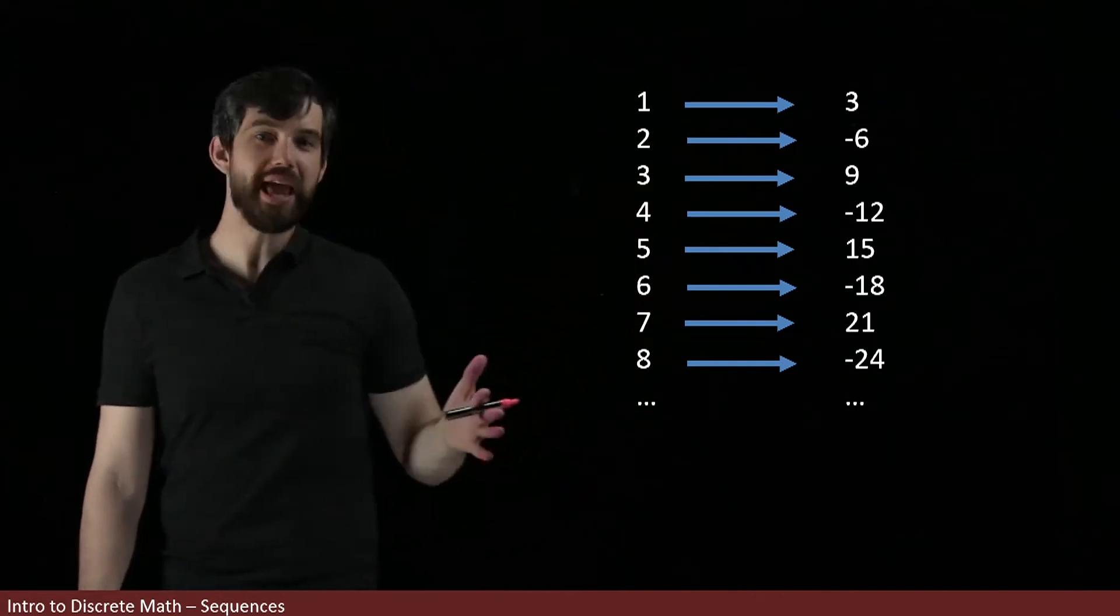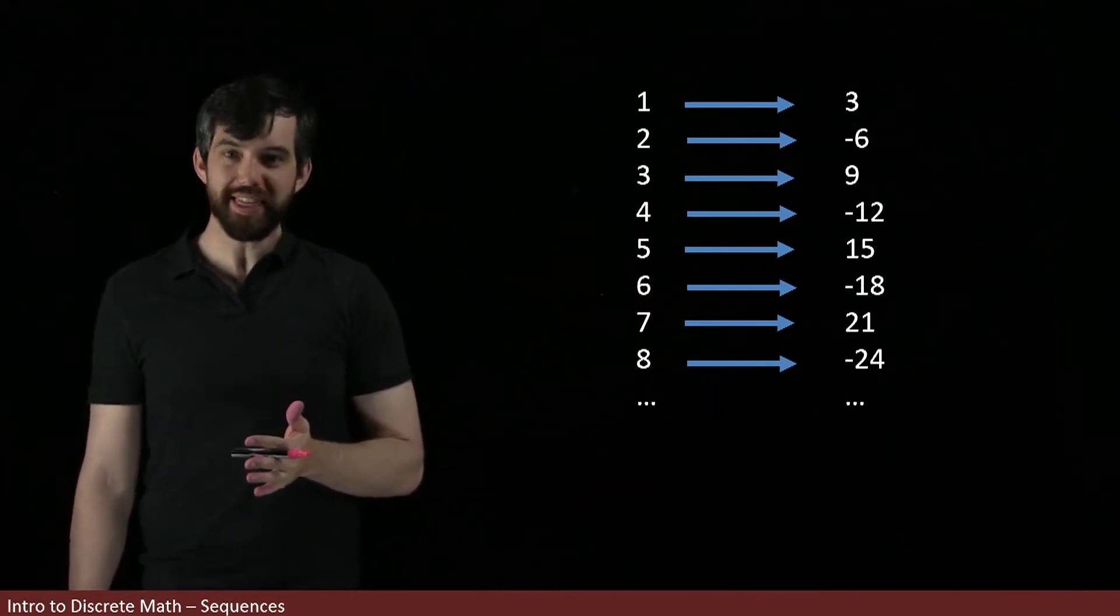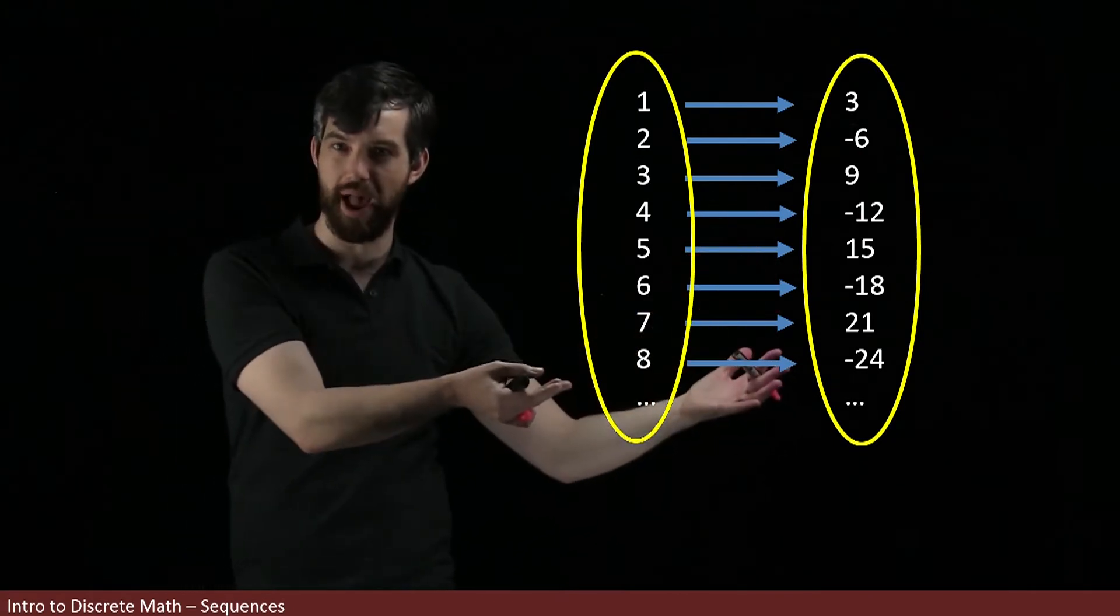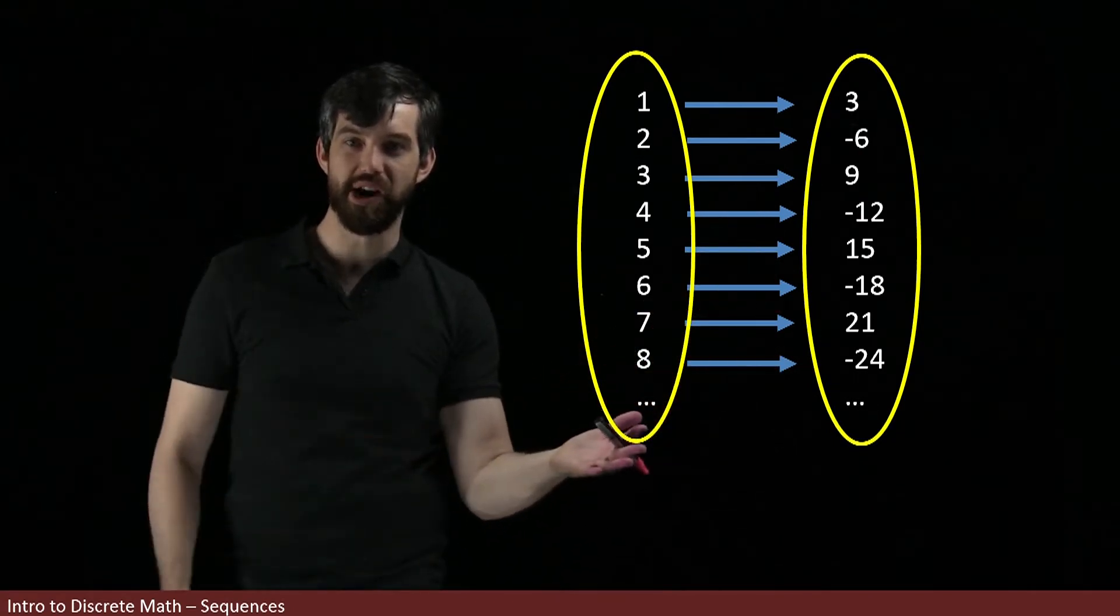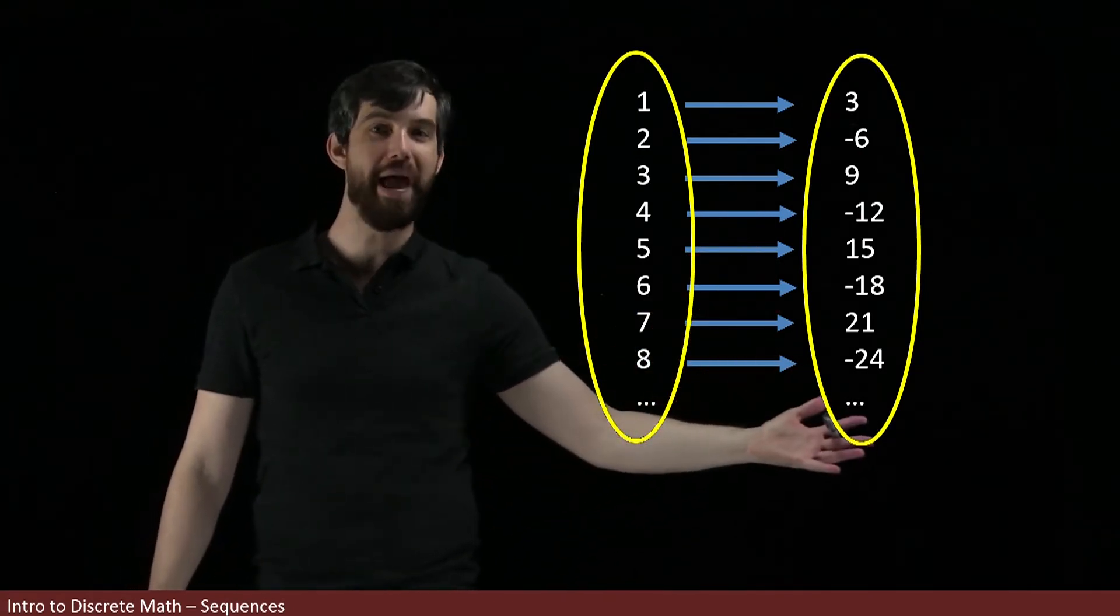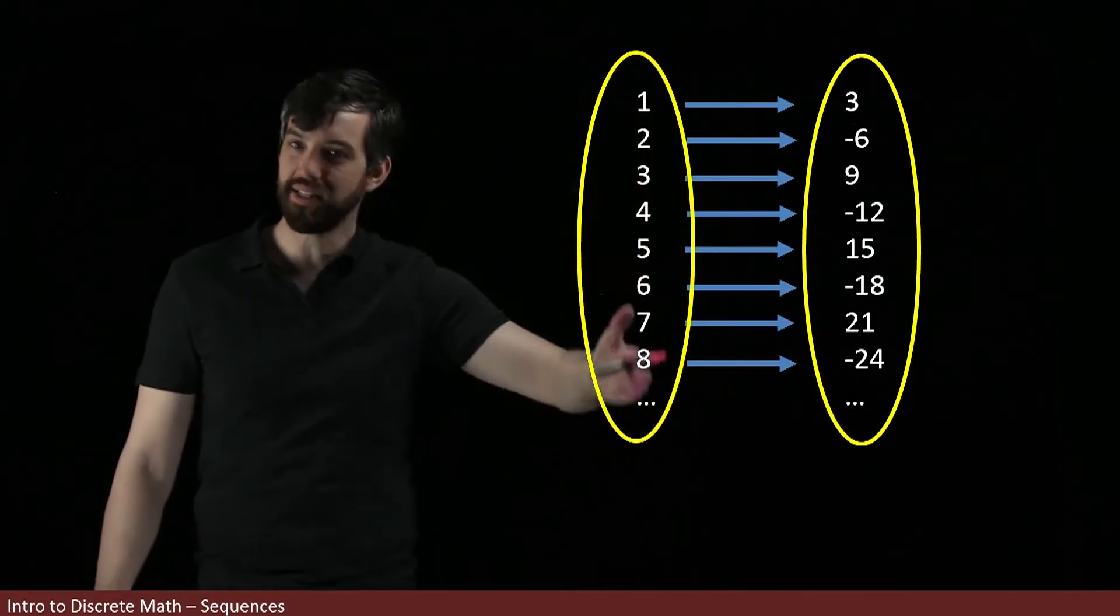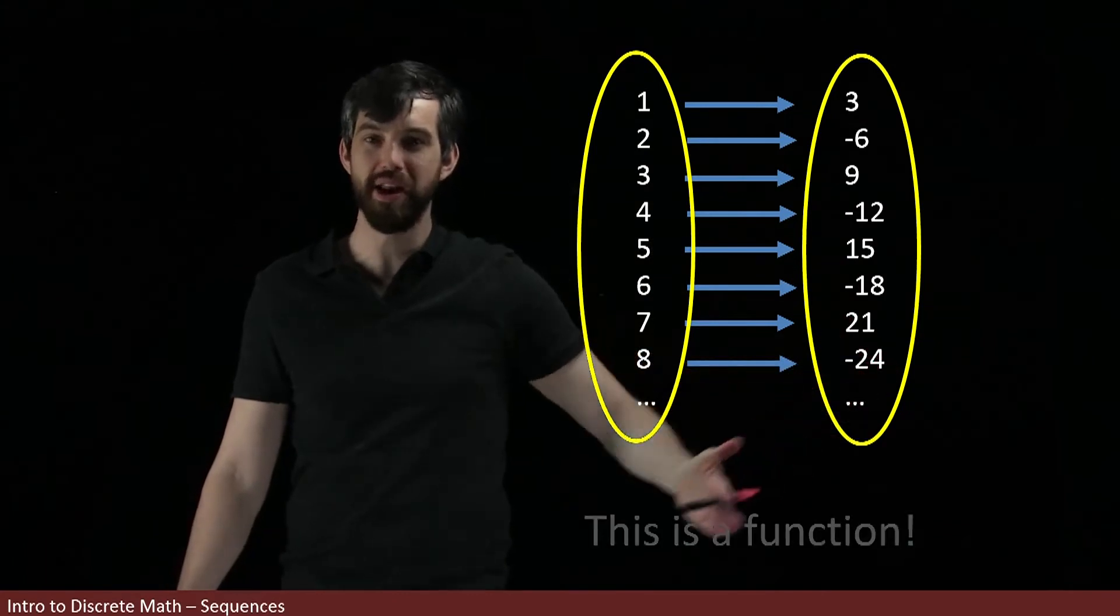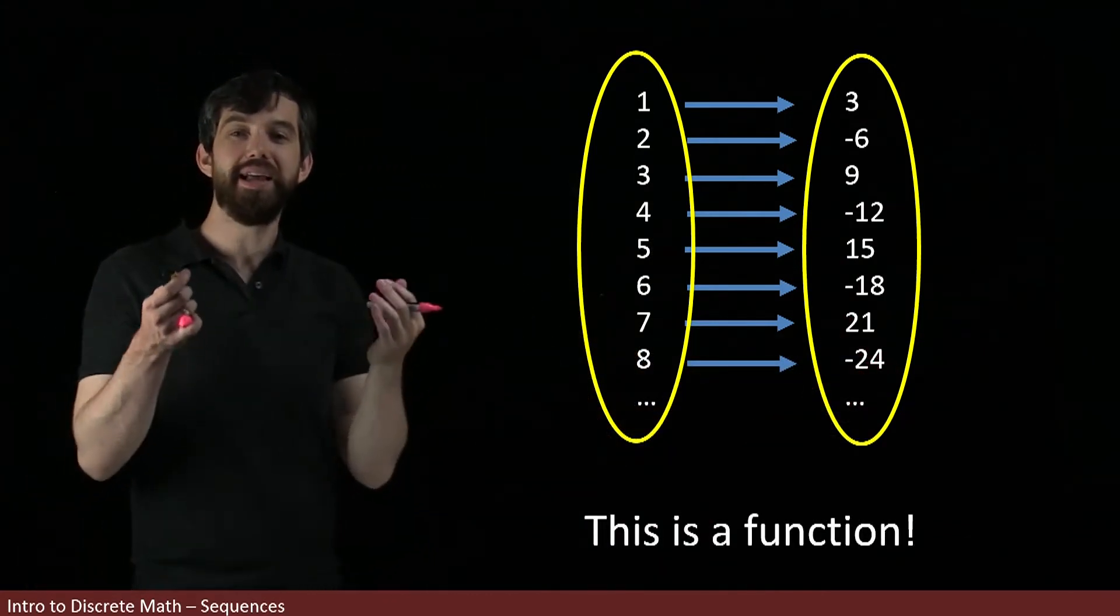So what do I really have here? Well, if I think about my sequences as being an arrow diagram, where I've got a domain here and I've got a codomain, and then the elements inside of my domain are all mapped to things in my codomain, what I'm describing is a function.